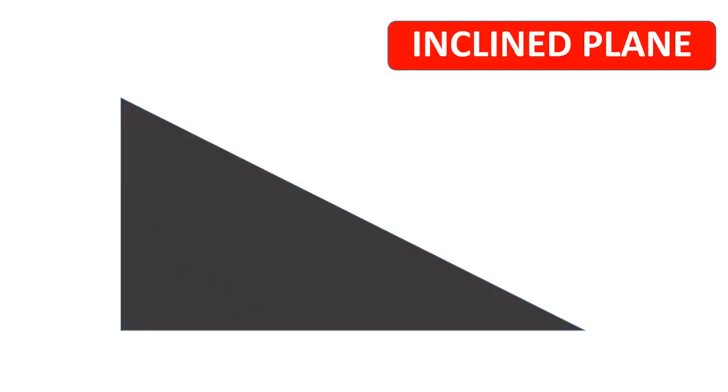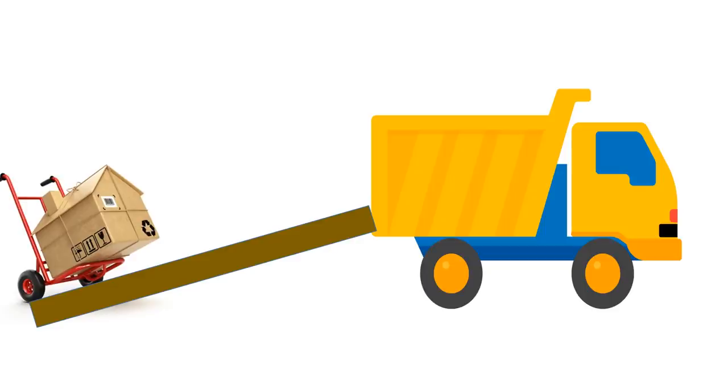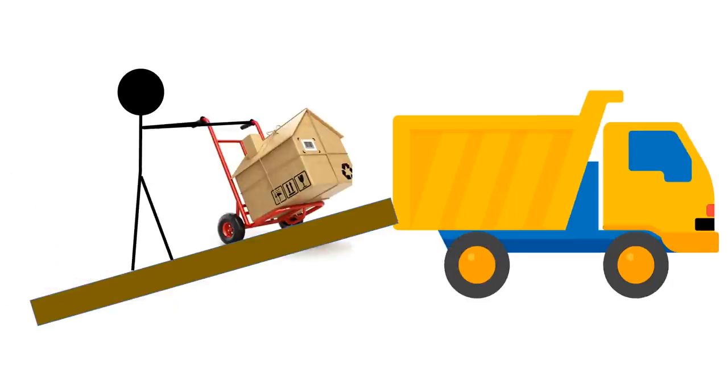Inclined plane: An inclined plane is simply an even sloping surface with no moving parts. It makes it easier for us to move objects to higher or lower surfaces than if we lifted the objects directly upwards.